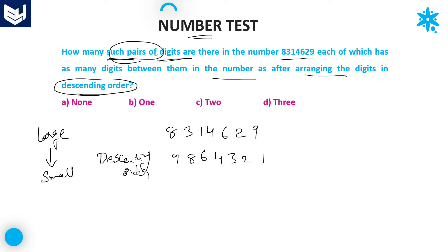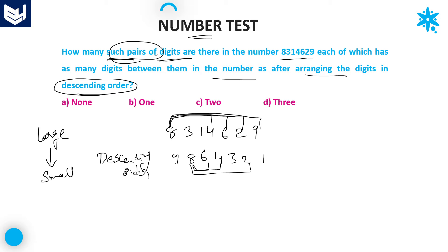Now we need to count the number of pairs, each of which has as many digits between them before arranging as after arranging in descending order. Between 8 and 3: 0 digits here, but 2 digits in descending. Between 8 and 1: 1 digit here, 4 digits there. Between 8 and 4: 2 digits here, only 1 there. Between 8 and 6: 3 digits here, no digit there. Between 8 and 2: 4 digits here, 3 there. Between 8 and 9: side by side. So with 8, no pair is formed.